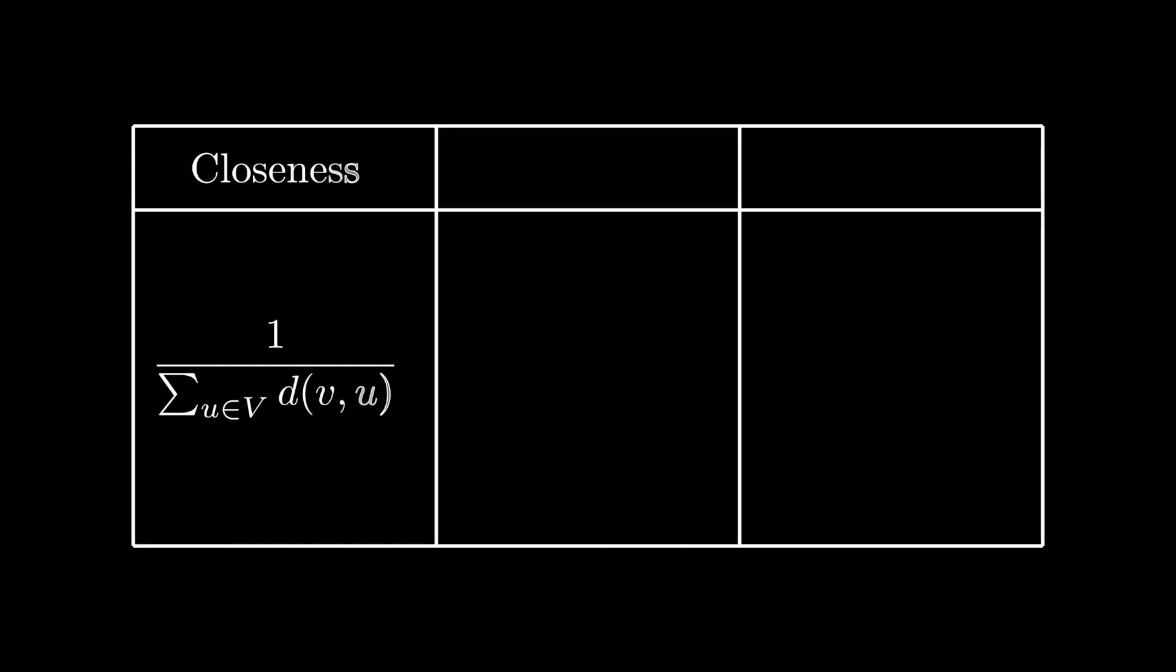An idea would be using the number of walks or paths that pass through that vertex and using that statistic to determine the importance. A few of the more classic centrality measures that use these are closeness, betweenness, and Katz.